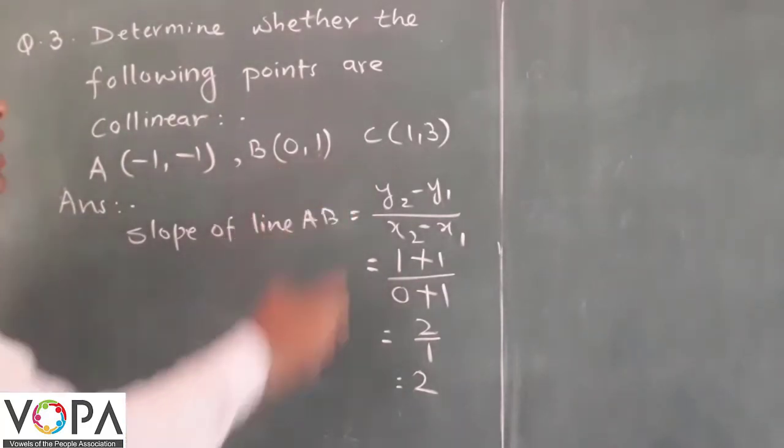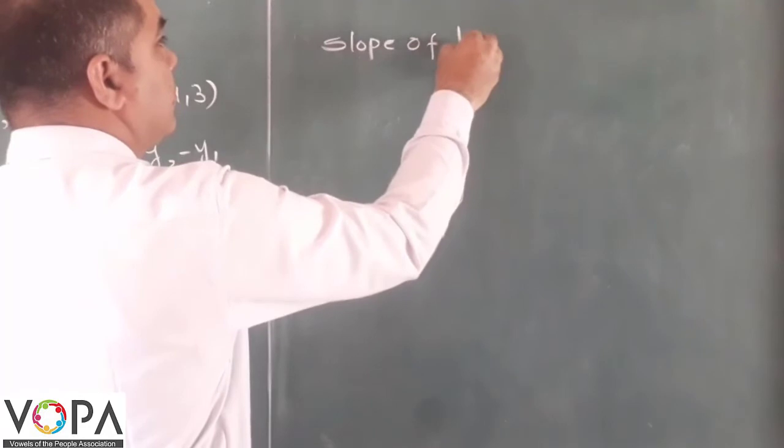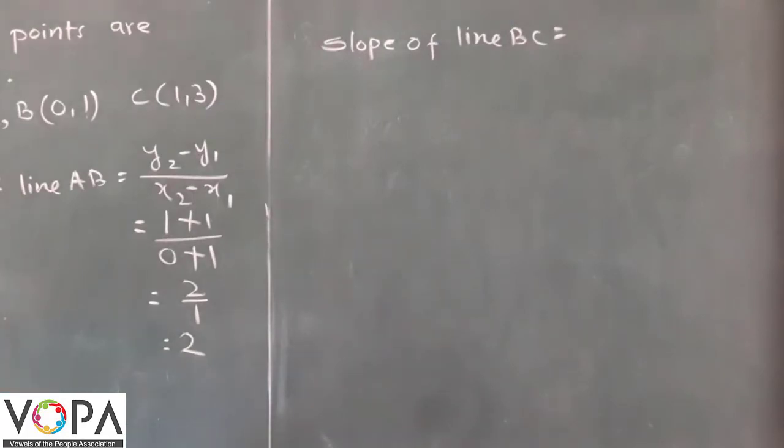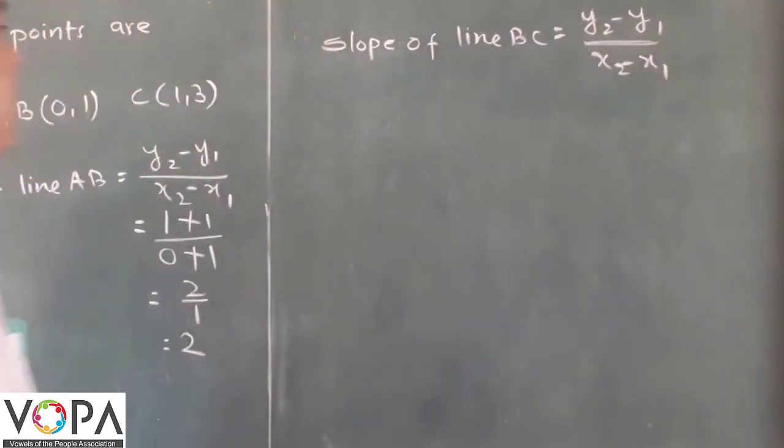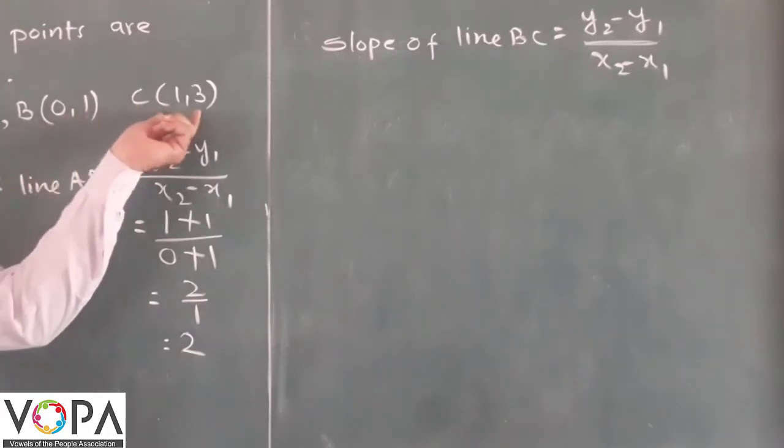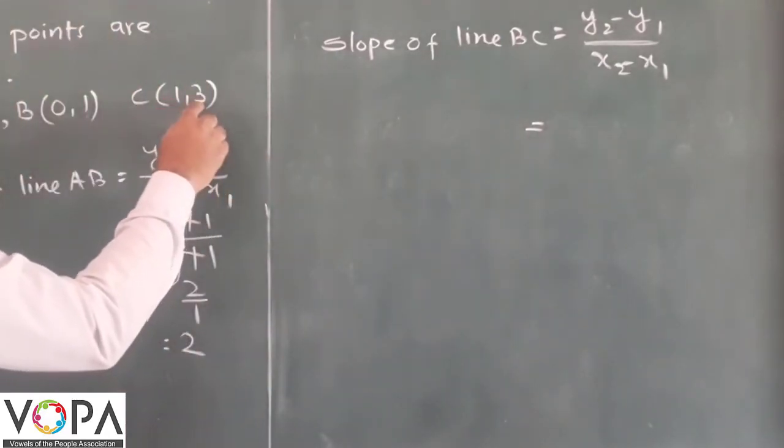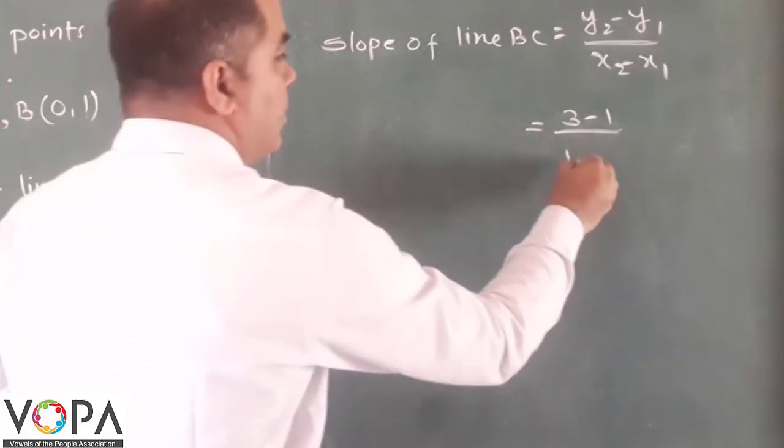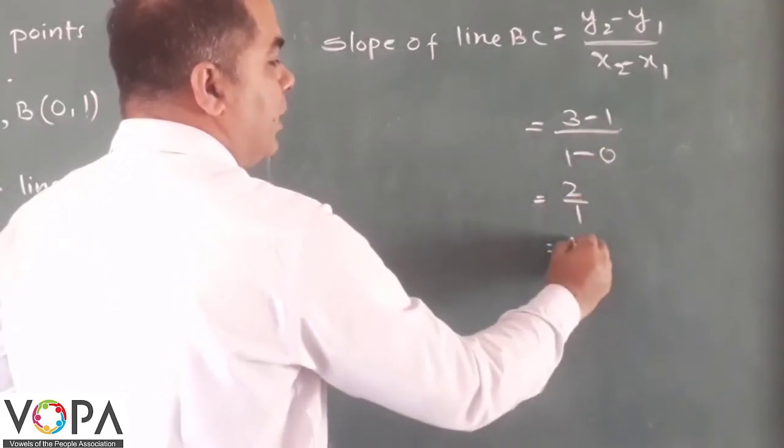Similarly, now find the slope between B and C. Again write the formula: y2 minus y1 over x2 minus x1. Here the coordinates of B will be x1, y1 and C will be x2, y2. Substitute the values: 3 minus 1 over 1 minus 0. Now 3 minus 1 equals 2, and 1 minus 0 equals 1, so 2 over 1 equals 2.